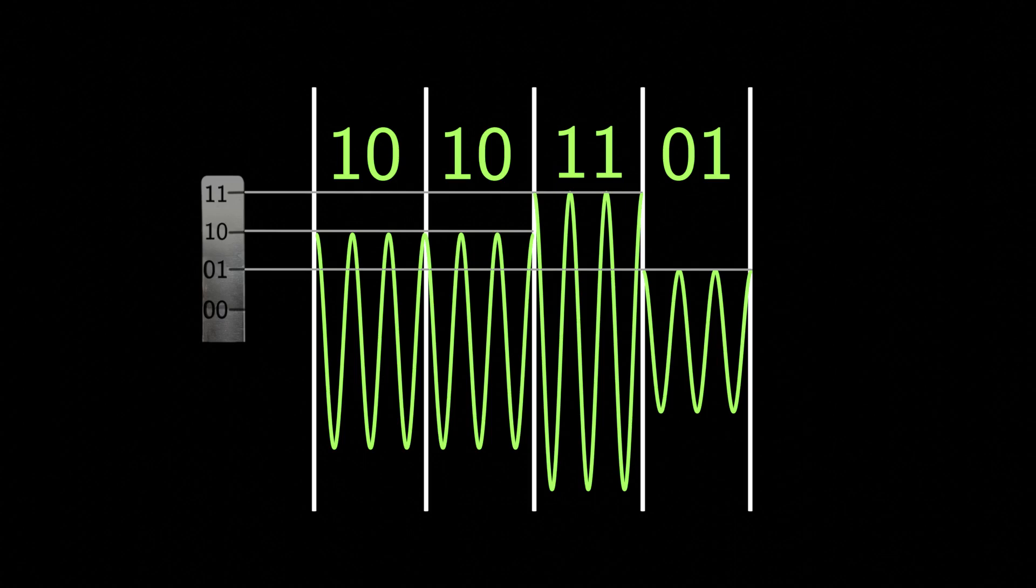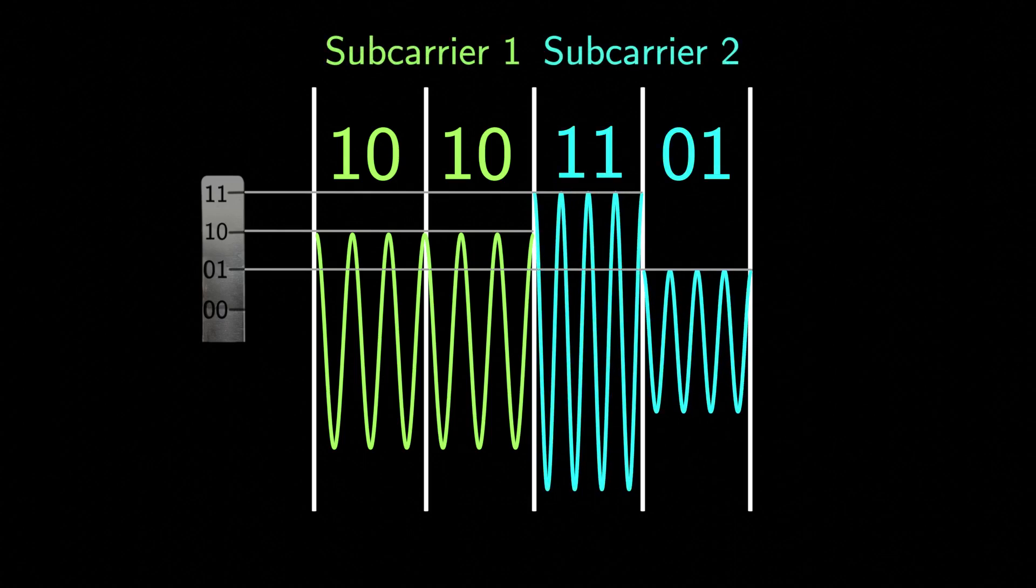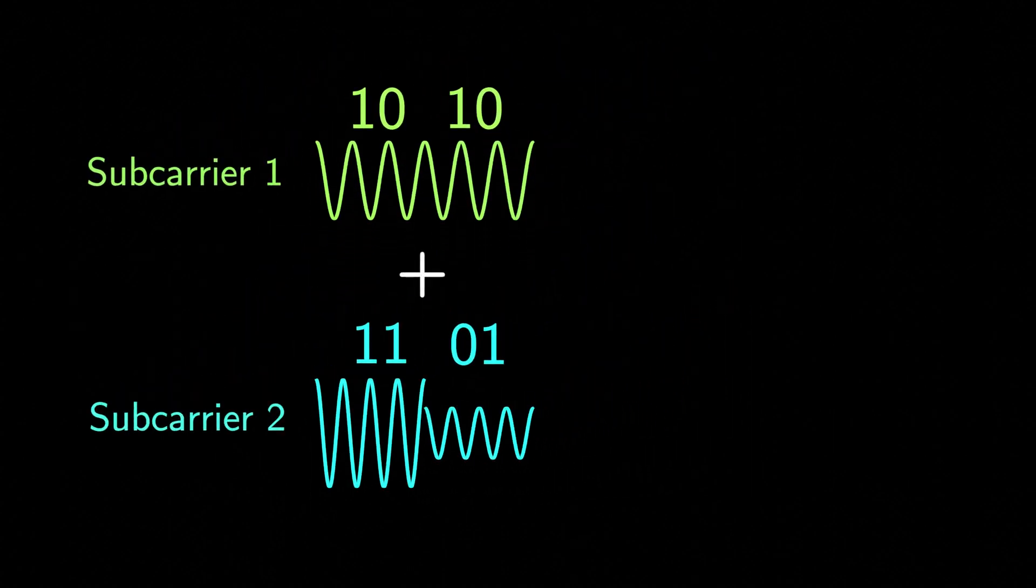Instead of using a single carrier wave, OFDM spreads the data over multiple subcarrier waves. Add them and transmit them all at once.